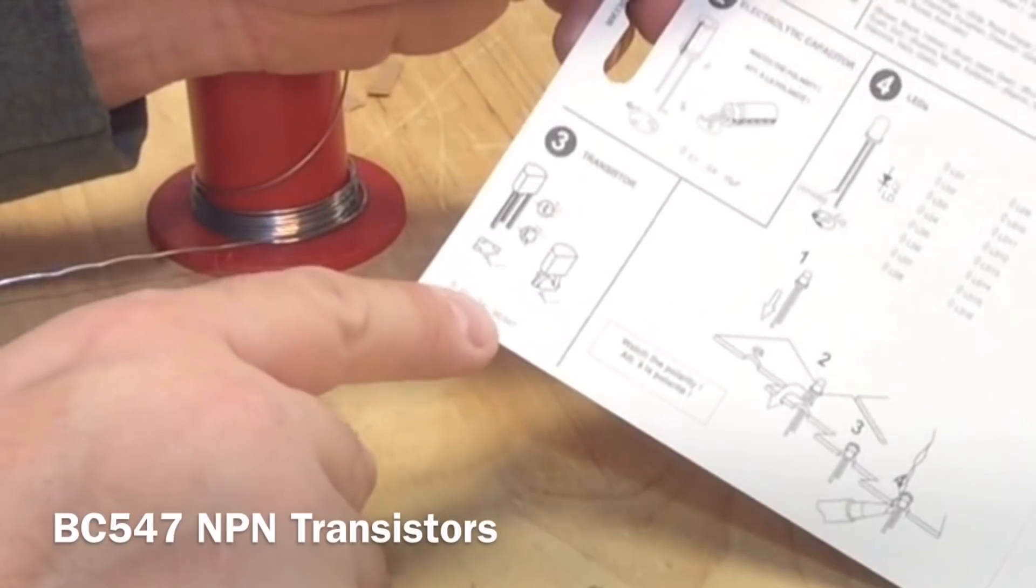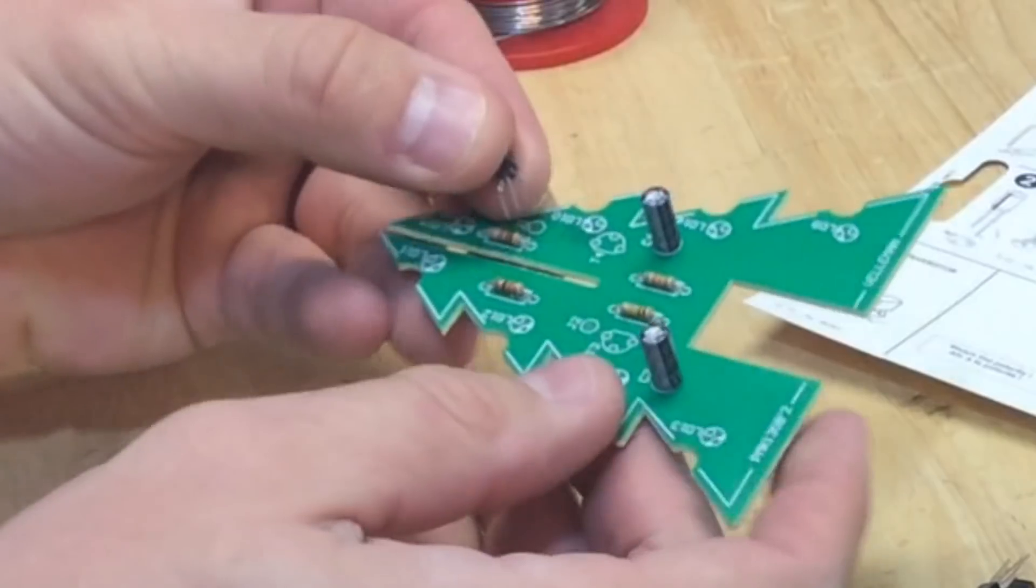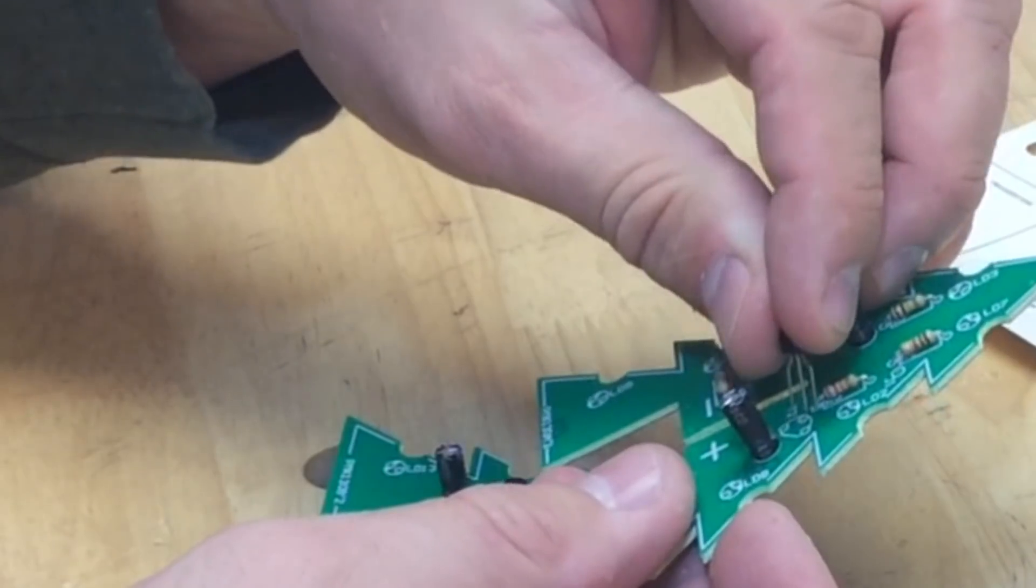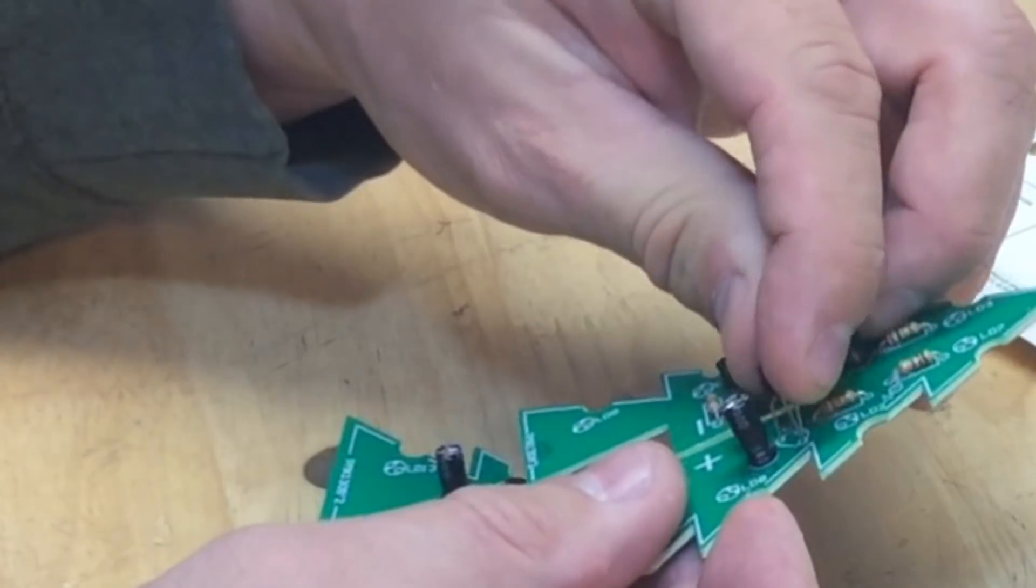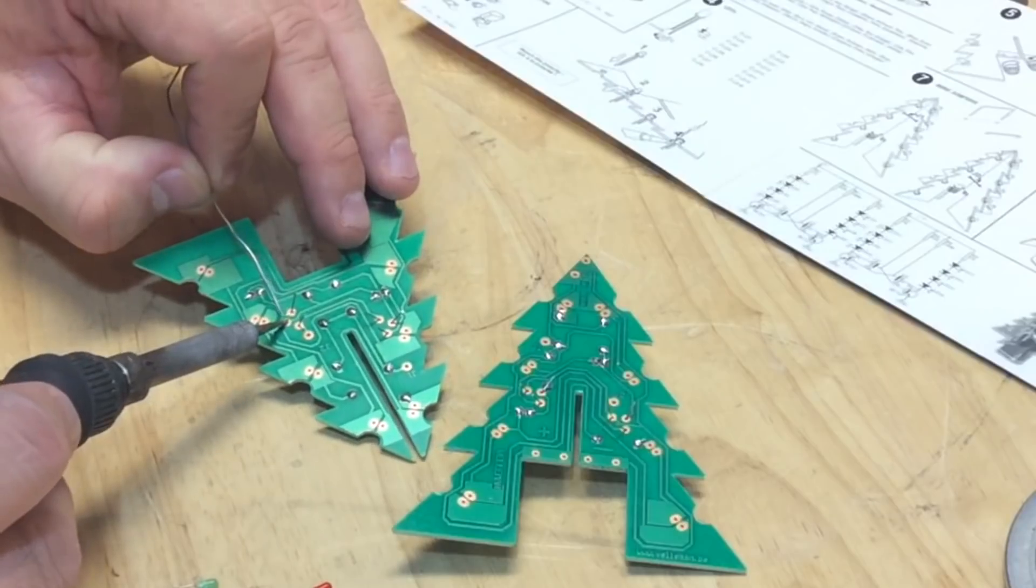So I got the capacitors installed. The next step was the transistors. The transistors have a flat mark, which normally indicates how it goes in, but on these boards they had it set up with a pin going behind it, which is really a little different format.